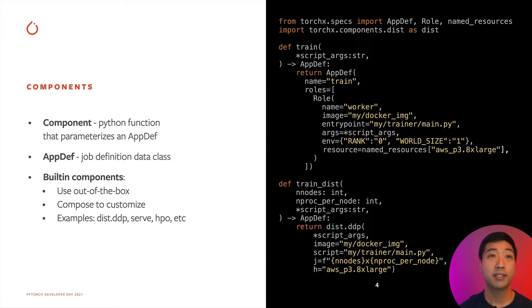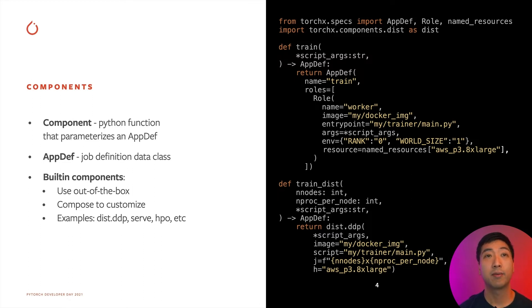On the other hand, train_dist is a distributed data parallel version of train where we ask the scheduler to run n_nodes number of containers, each container running n_proc_per_node number of trainers. But unlike train, rather than spelling out the AppDef, it's using a built-in distdp component, which makes things much more concise despite asking the scheduler to run a more complicated job. Components exist in TorchX because they essentially parameterize an AppDef. The parameterization criteria is completely your choice — for example, by functionality or by development stages. In train_dist, we parameterize the built-in distdp only on the job size, while hard-coding the entry point, image, and host type. Built-in components such as distdp, serve, and HPO can be composed into custom components or run out of the box.